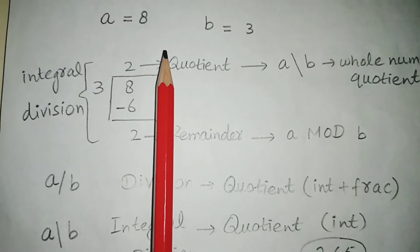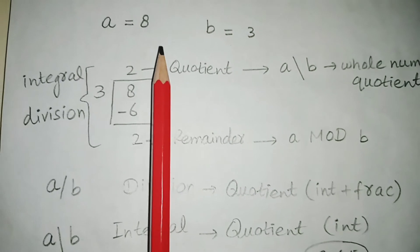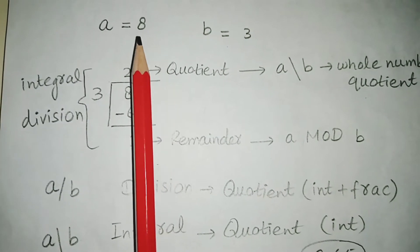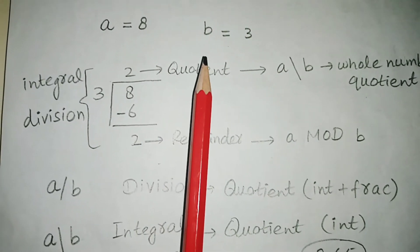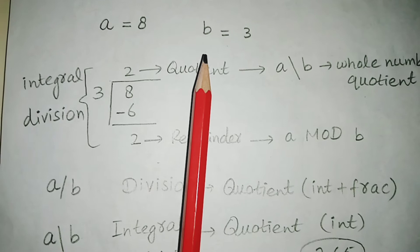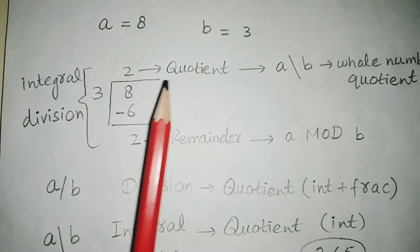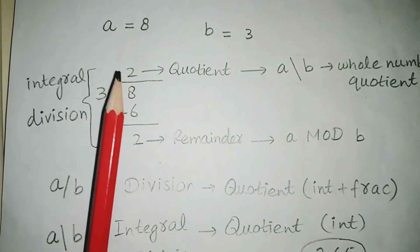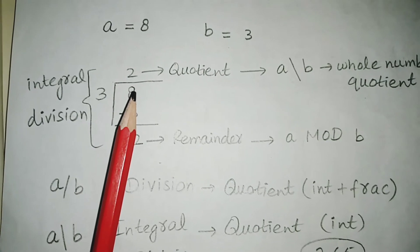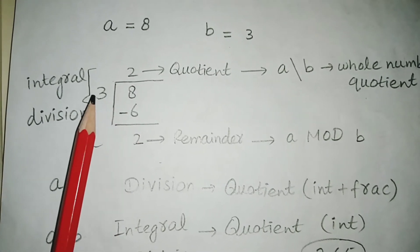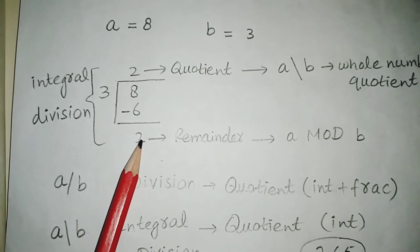Let's discuss an example related to the modulus operator. Here are two data values: A = 8, B = 3. Now let's find A MOD B. Divide 8 by 3 — three twos are 6, so the remainder is 2.